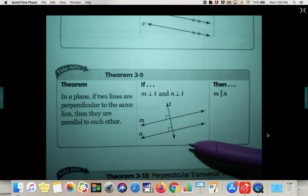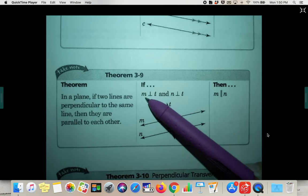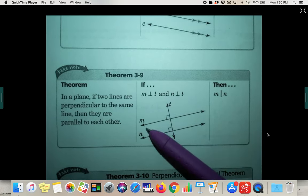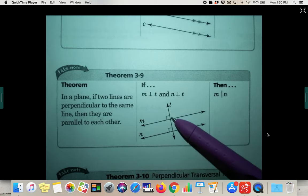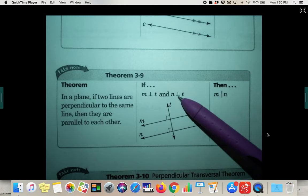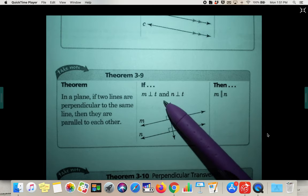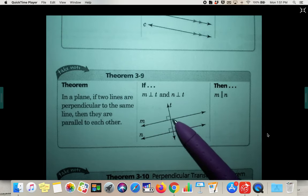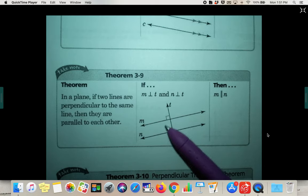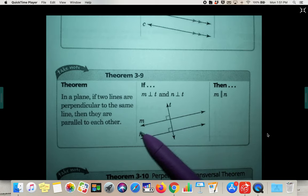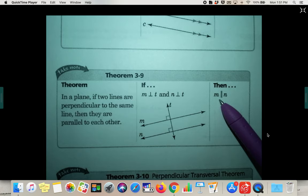Theorem 3.9 states that if M is perpendicular to T—remember, perpendicular means it creates 90-degree angles, they meet at a right angle—and if N is perpendicular to T as well, then that means M and N are parallel to each other. So basically if T is a transversal that cuts both M and N into 90-degree angles, then M and N are parallel to each other.